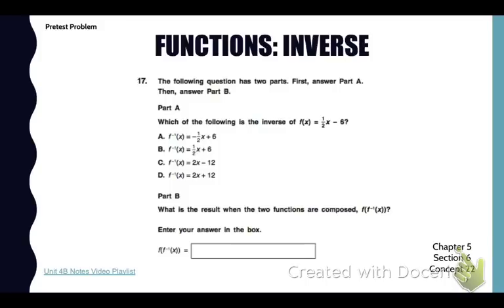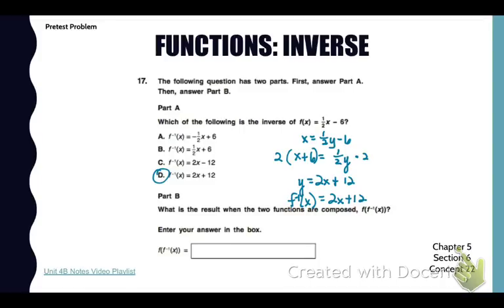Go back to your pretest packet and look at number 17. This question has two parts. The first part is we need to find the inverse of the function f(x) = ½x - 6. Go through the steps of finding the inverse, which means in an xy equation, you're going to exchange your x and y and then solve for y. So our new equation is 2x + 12, which is choice d. Now my second one is what is the result when two functions are composed. I'm going to take the inverse of f(x) and put it into f(x). You can see that I'm taking 2x + 12 and plugging it into the f(x) equation. And when I simplify, I get x.